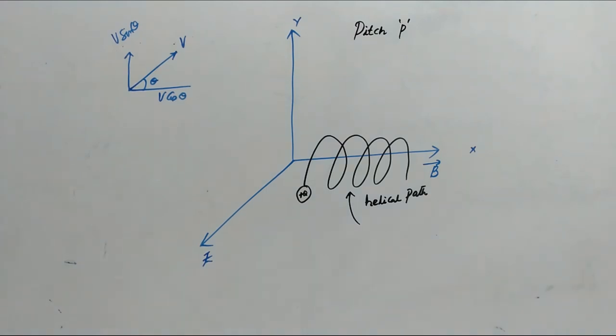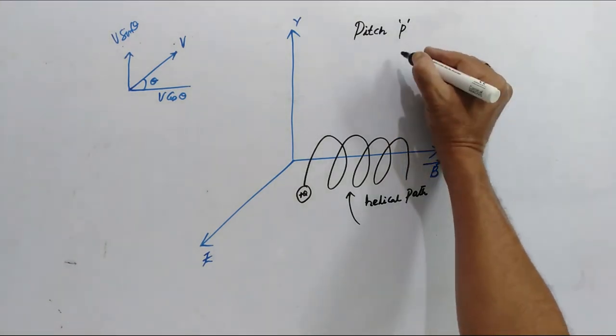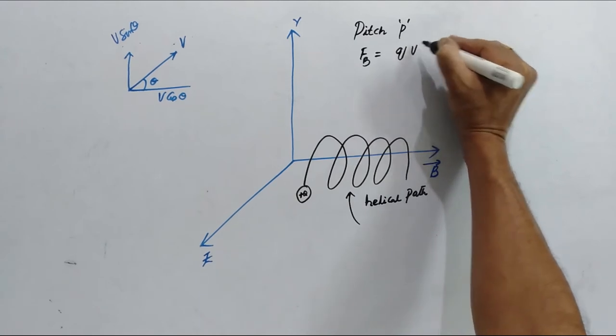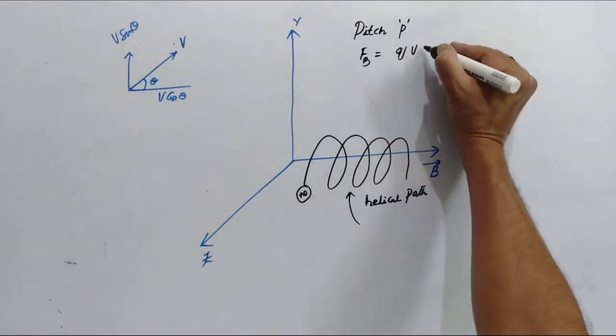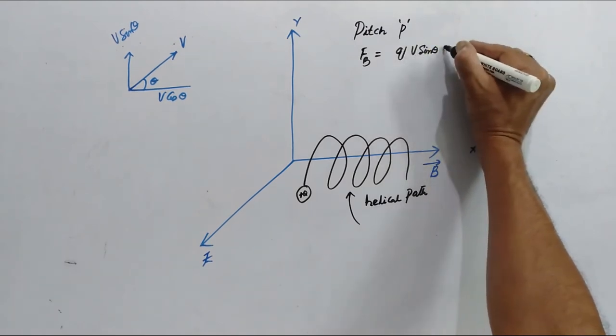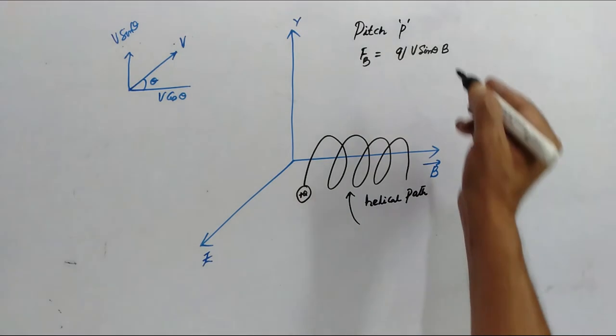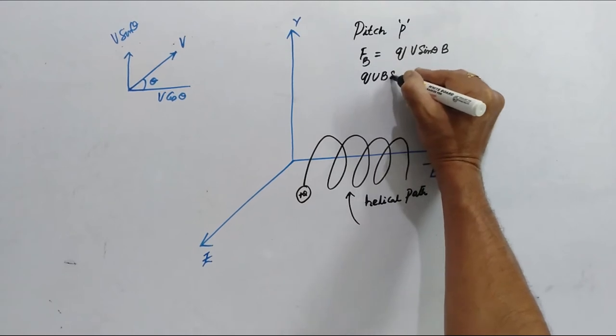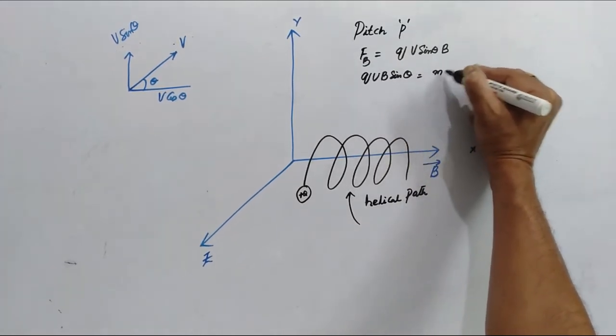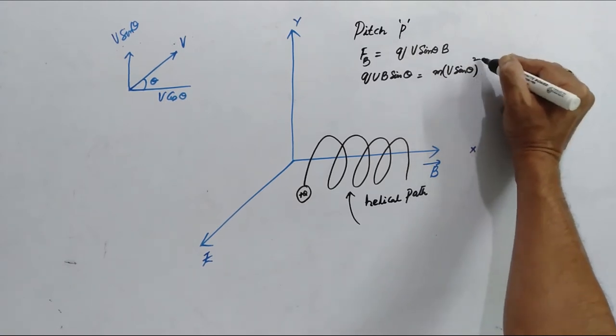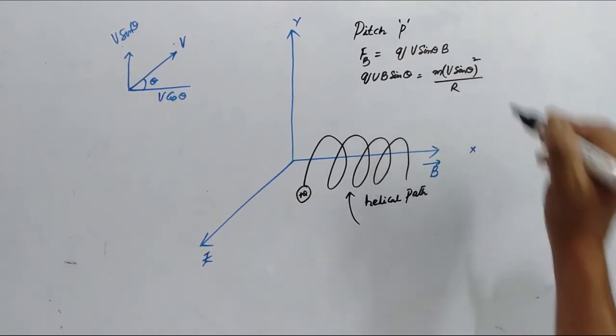Now, to calculate the radius, we will again follow the same formula. The Lorentz force FB is due to V sin theta. So, we take the perpendicular component Q V sin theta and then B. This Lorentz force will provide the centripetal force M V sin theta square by R the radius.